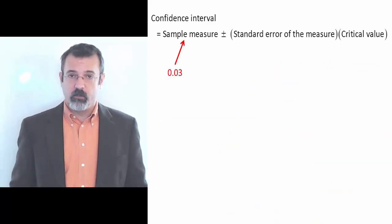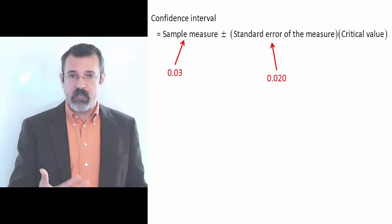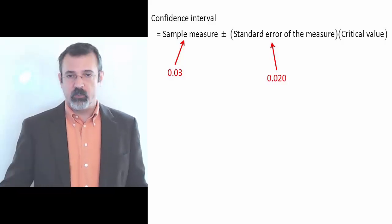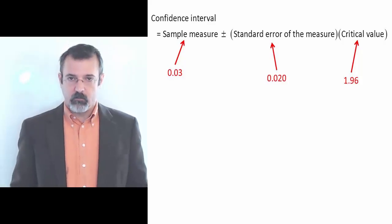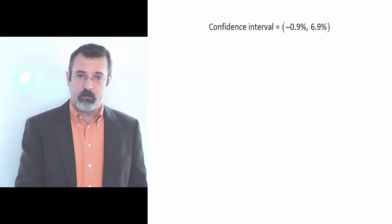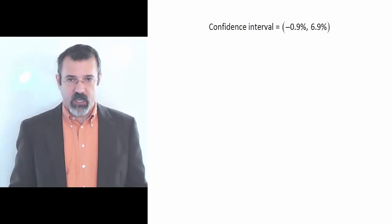So we have a sample measure of 0.03. The standard error of the sample measure is 0.02 and a critical value of 1.96. Putting all of this together gives us the confidence interval on the low end of negative 0.9% and on the high end of 6.9%.